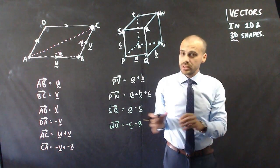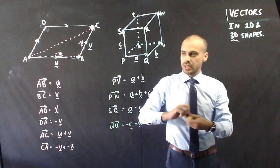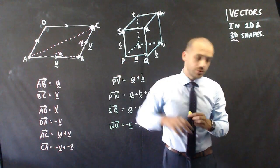That's vectors within these two and three d shapes, being able to talk about paths from one point to another.